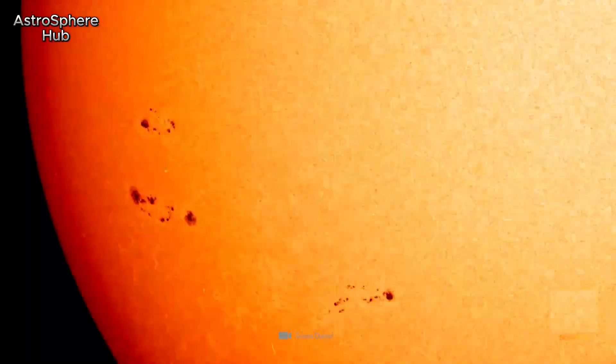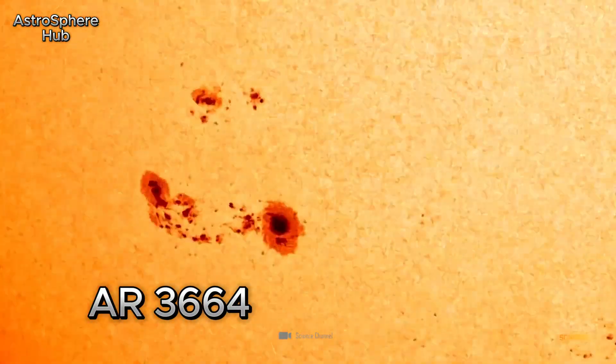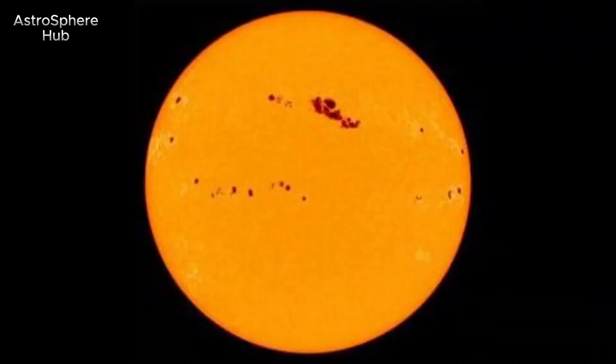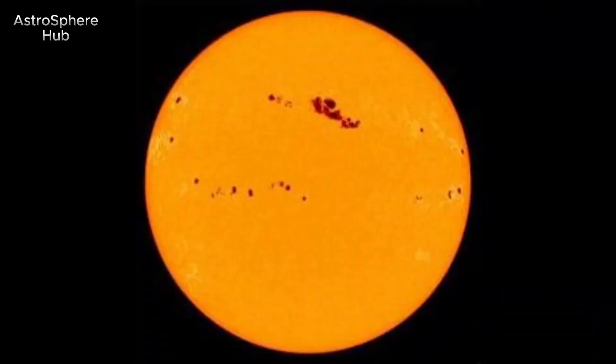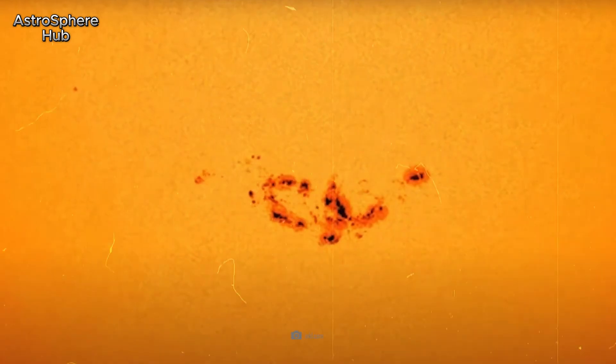The particle streams were caused by the active sunspot AR 3664, which is one of the largest solar anomalies we humans have ever observed. Scientists have been warned because this spot already has the potential to trigger a new Carrington event.